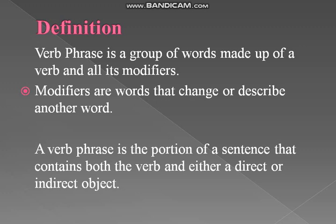A verb phrase is the portion of a sentence that contains both the verb and either a direct or indirect object. As you know, in a simple sentence we have subject, then verb, and then object. So except the subject, the part of the sentence which consists of a verb and direct object or indirect object — that would be the verb phrase.